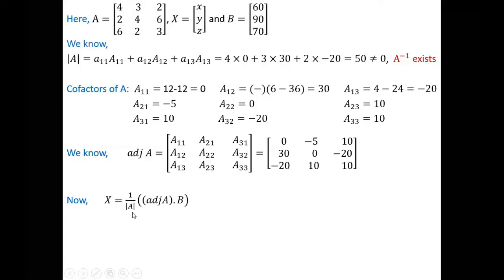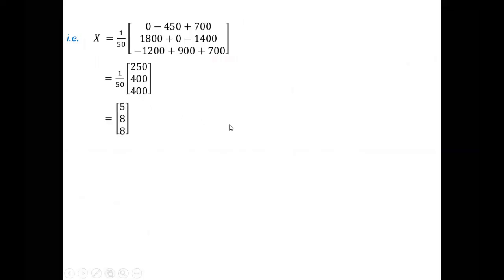A inverse B is 1 by determinant A times adjoint A times B. Let us substitute the value. So now if we multiply using matrix multiplication, ultimately we will have this value. If we calculate this one, ultimately this will become 250, 400 and 400. So if we divide by 50, ultimately it will be 5, 8 and 8.